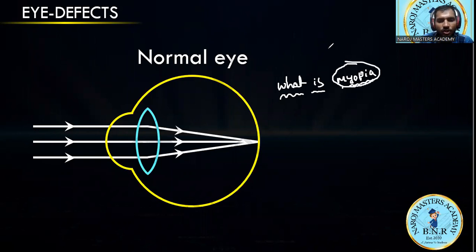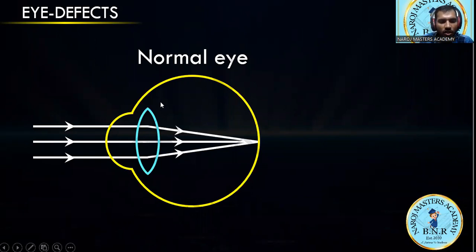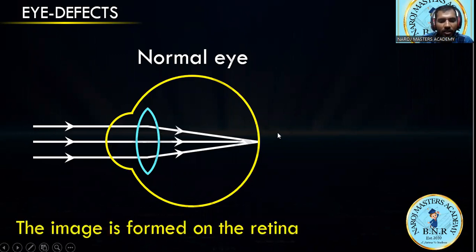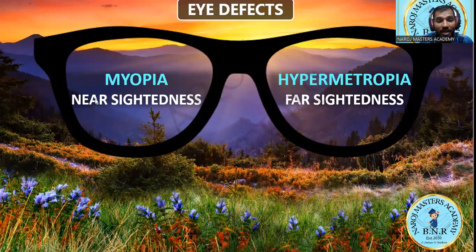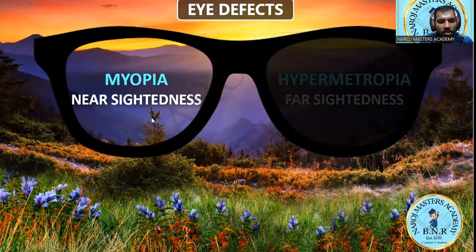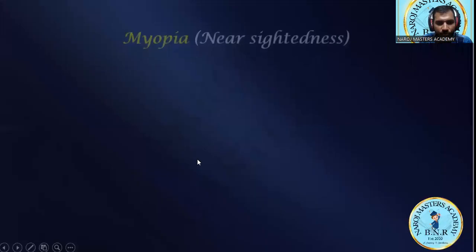Let's move to the concept. This is a normal eye structure, and these are the light rays incident on the eye, intersecting at a point on the retina. There are basically two main defects plus a third. The first defect is myopia, also known as nearsightedness. The second is hypermetropia, also known as farsightedness. The third is presbyopia. Today we'll discuss myopia.